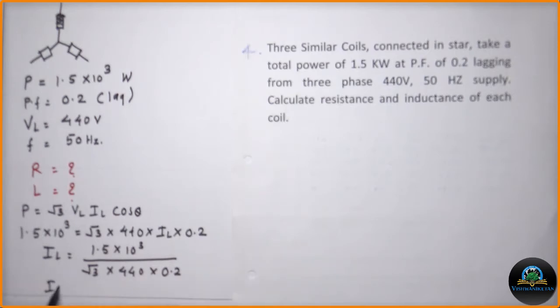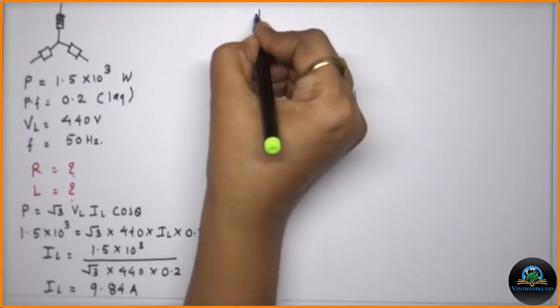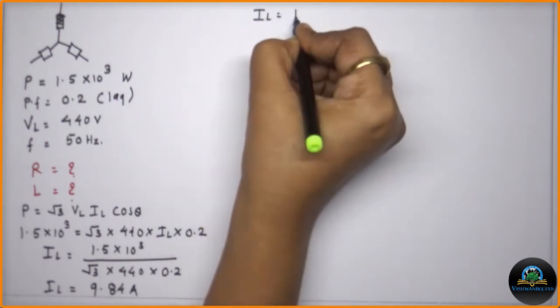So IL after this calculation is nothing but 9.84 amperes. As it is a star connection, IL is equal to my IPH.